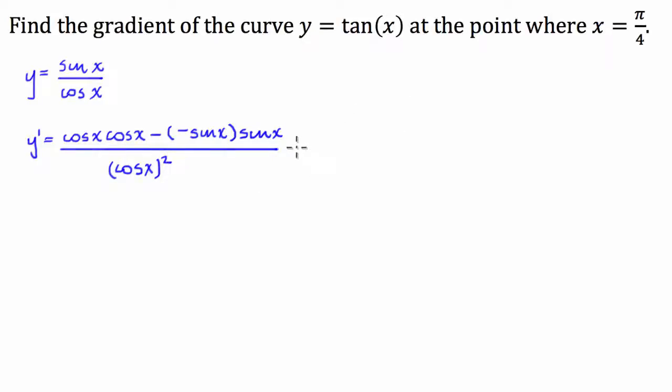Now what we can do is we can simplify this. Cos of x times cos of x is cos squared of x. And this is minus times minus, it's going to be a positive sine squared of x.